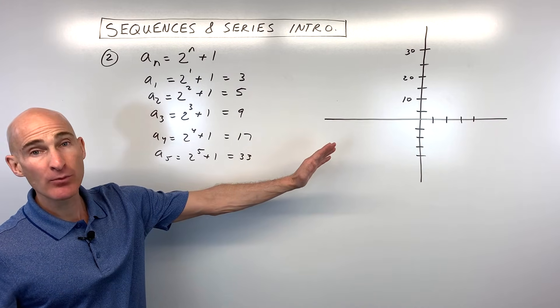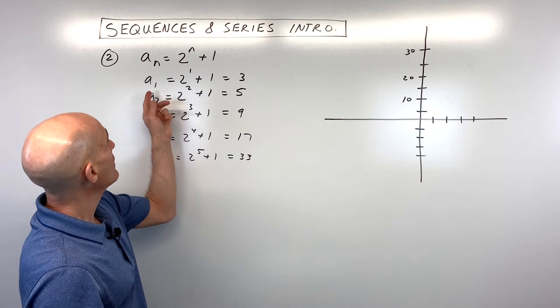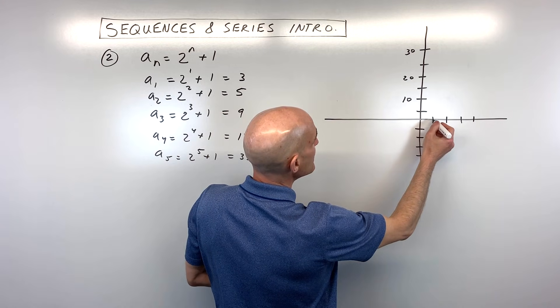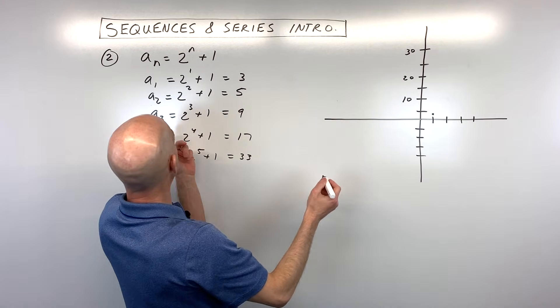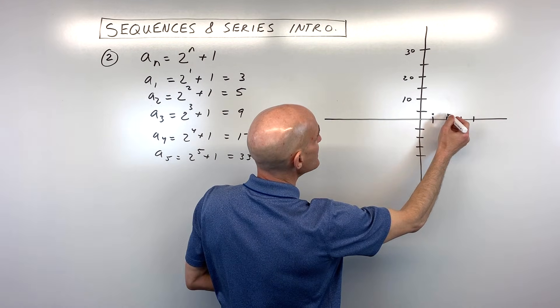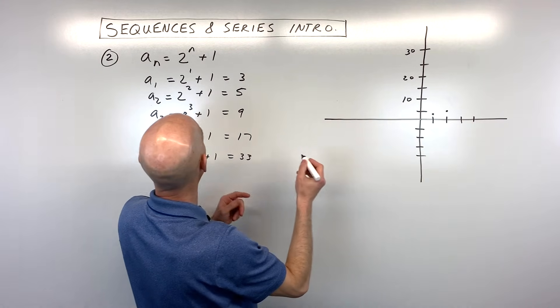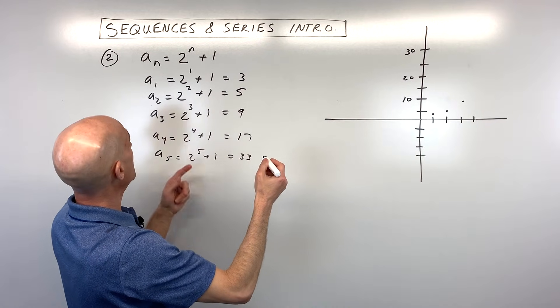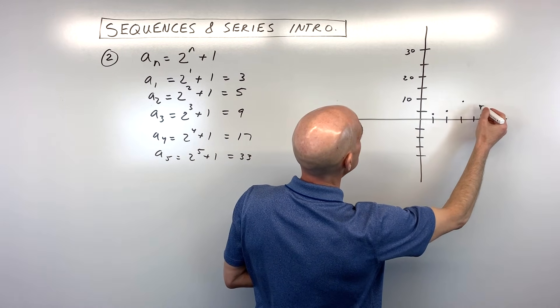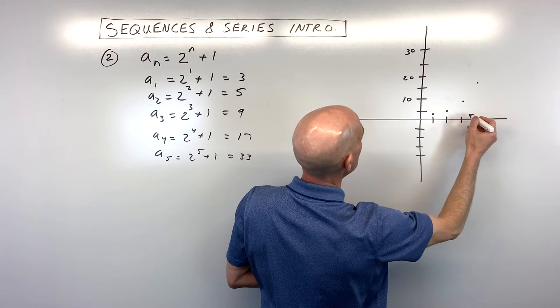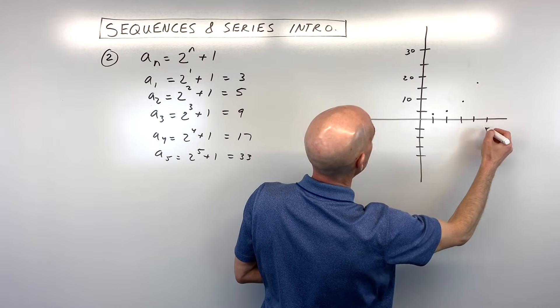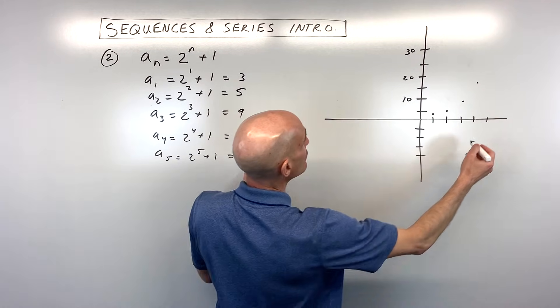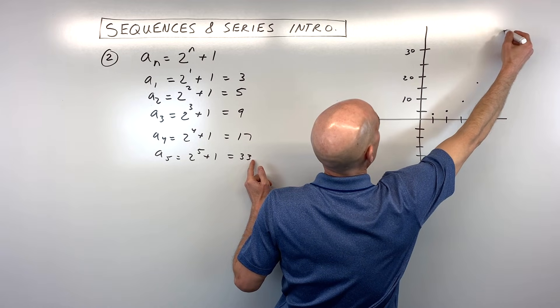So let's go ahead and plot these points. I want to show you the pattern here. The first term is 3, so that's going to be right about here. The second term is 5, so that's going to be right about here. The third term is 9, which is right about here. And the fourth term is 17, which is somewhere around here. I'm counting by 5s on the y-axis. The fifth term is at 33, which is somewhere right around here.